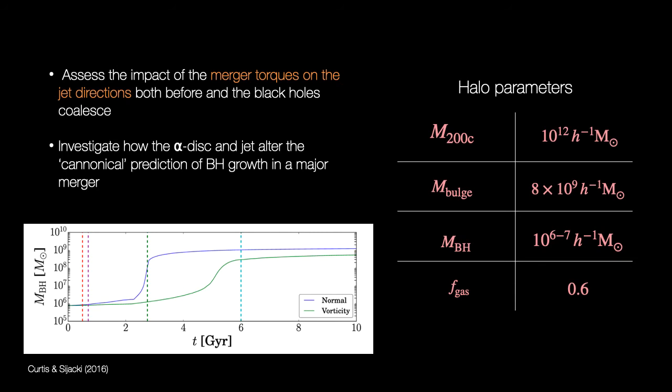I've put some other relevant galaxy parameters up here on this slide. These simulations will allow us to assess the impact of the merger torques on the jet directions, both before and after the black holes coalesce. We can also investigate how the presence of alpha disks and jets alter the predictions of black hole growth during a major merger.